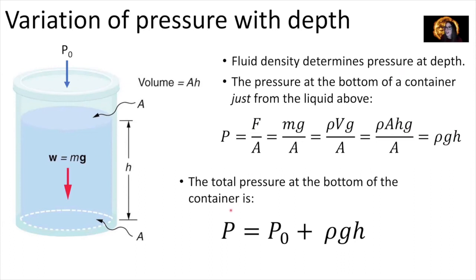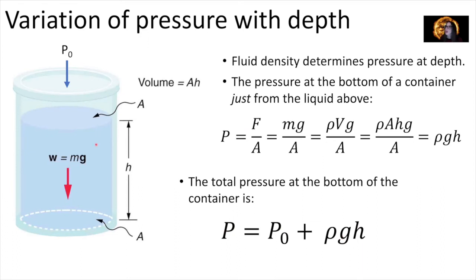The total pressure at the bottom of a container equals the atmospheric pressure already existing above the liquid, p-naught, plus the pressure from the liquid itself, rho·g·h. So the pressure at the bottom of a cup of water equals 1.01 times 10 to the 5 Pascals, plus the density of the fluid times the acceleration due to gravity times the height of the fluid column.